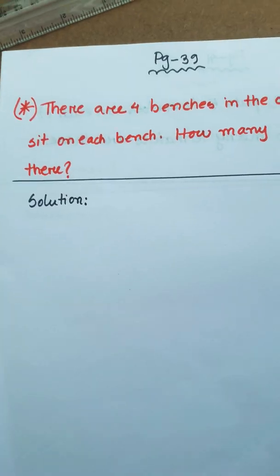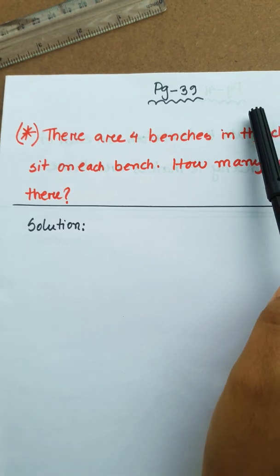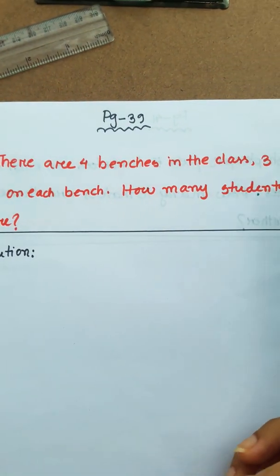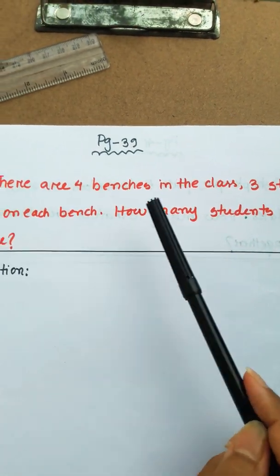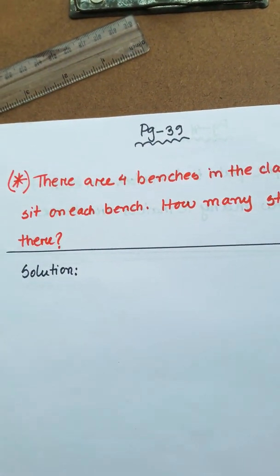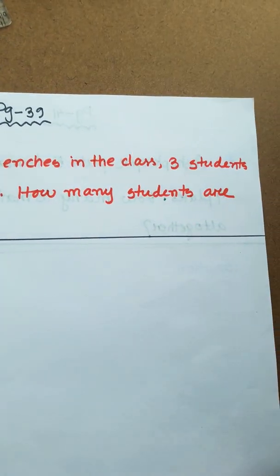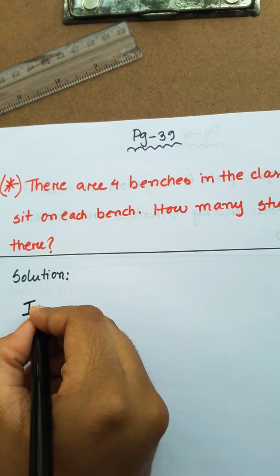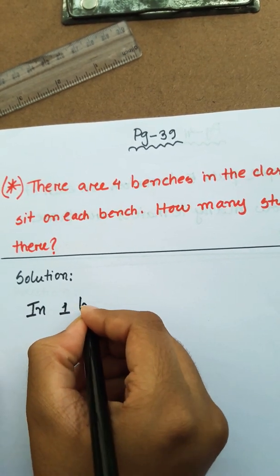Now the next math is page 39. There are 4 benches in the class. 3 students sit on each bench. How many students are there? 4 benches and each bench has 3 students.